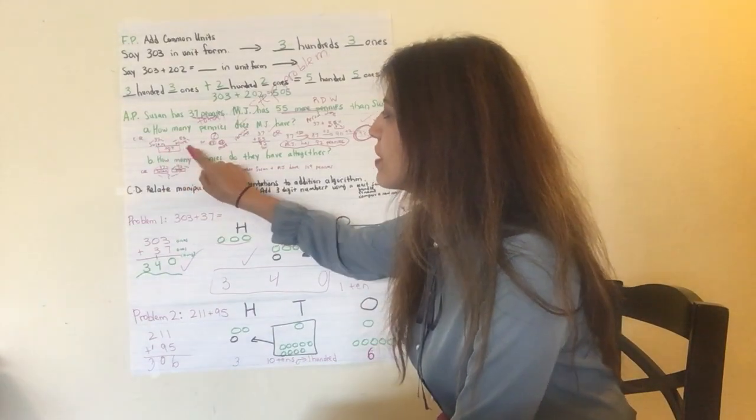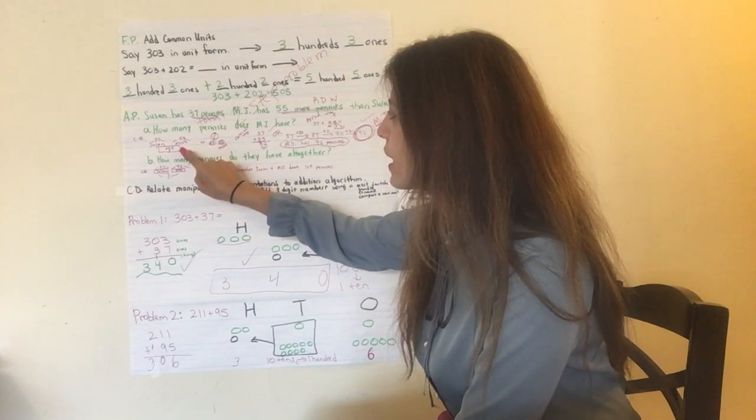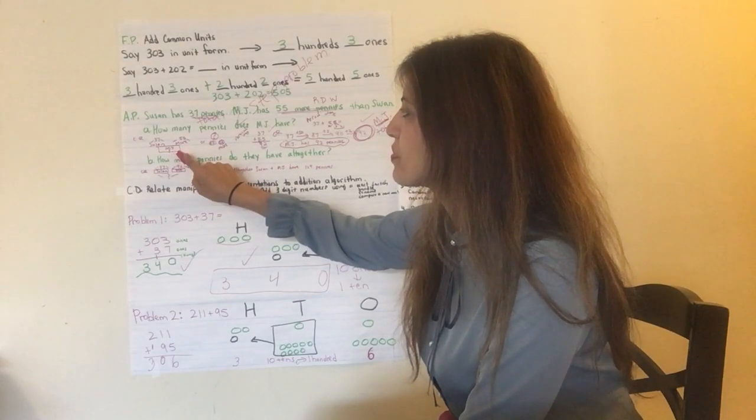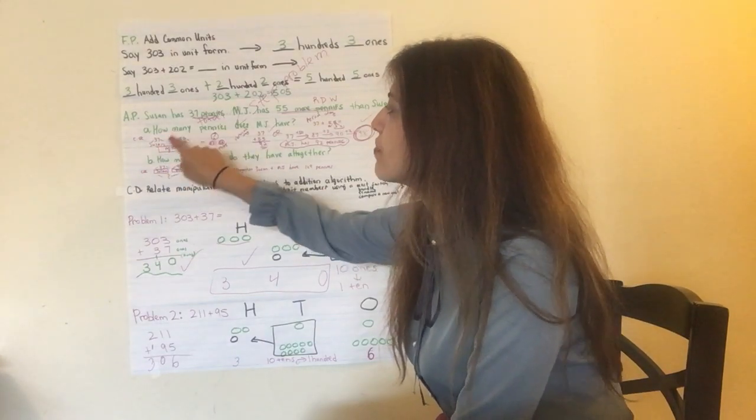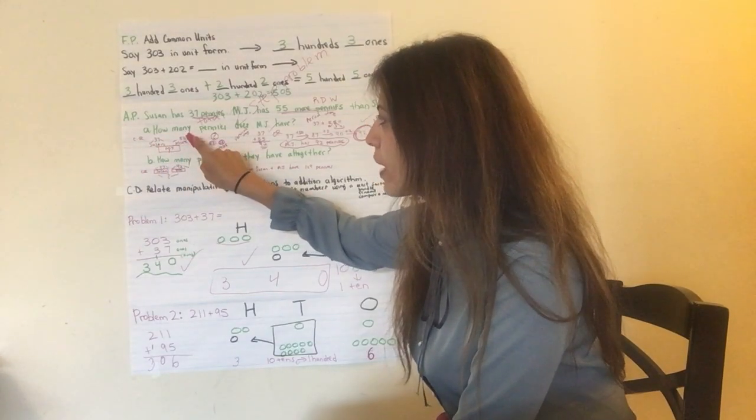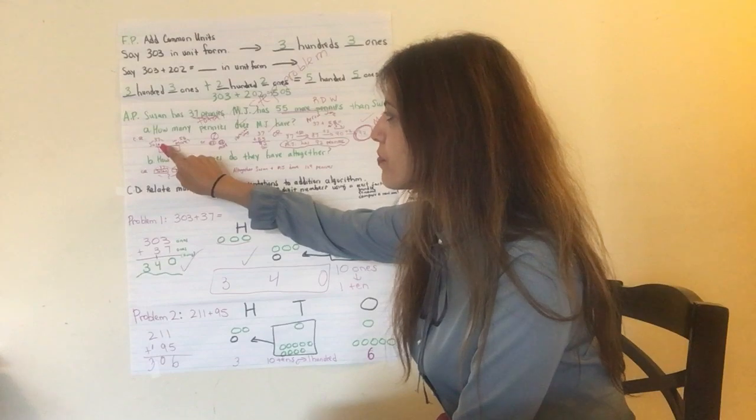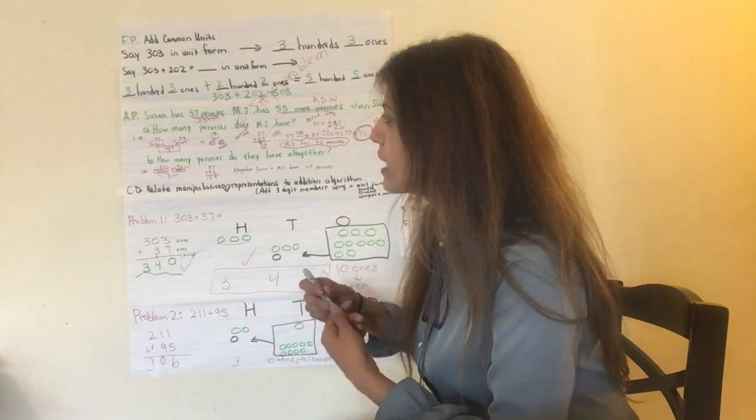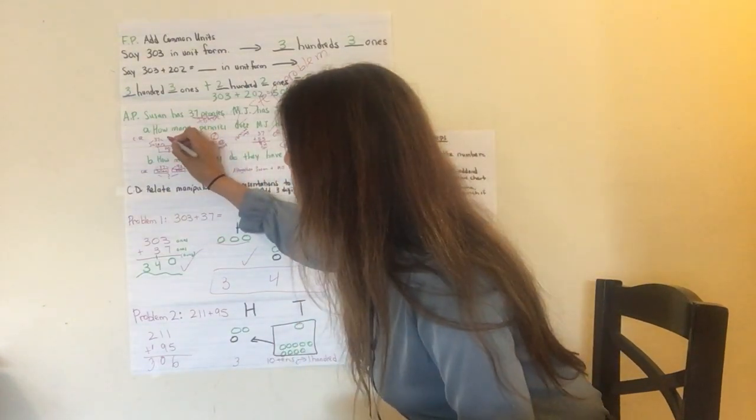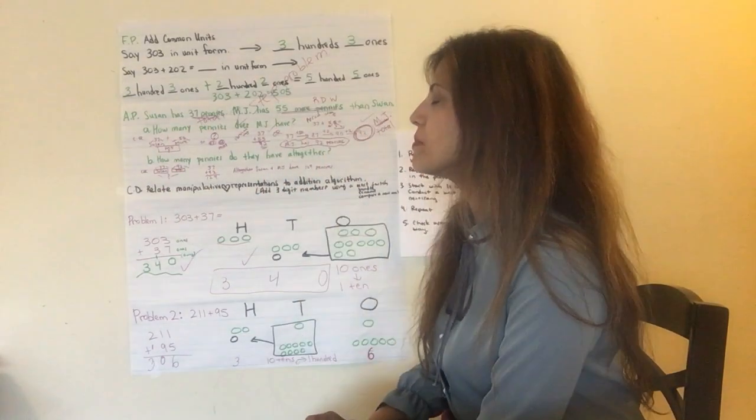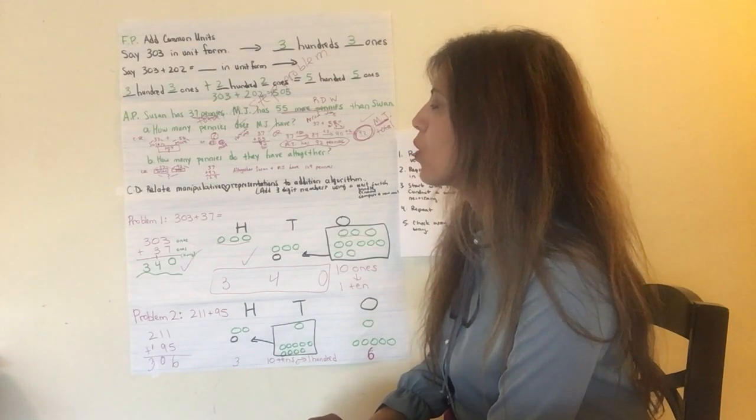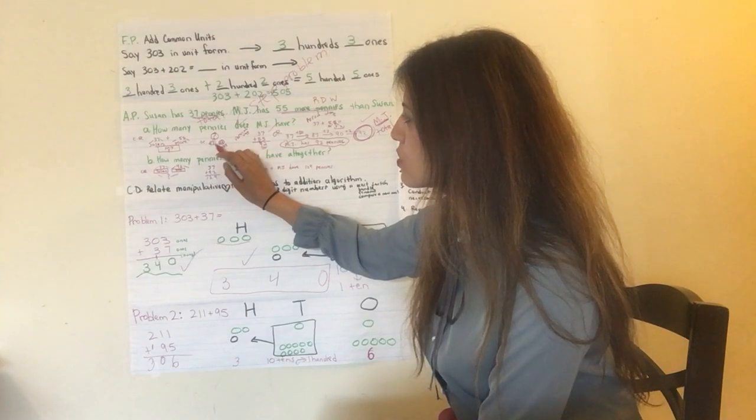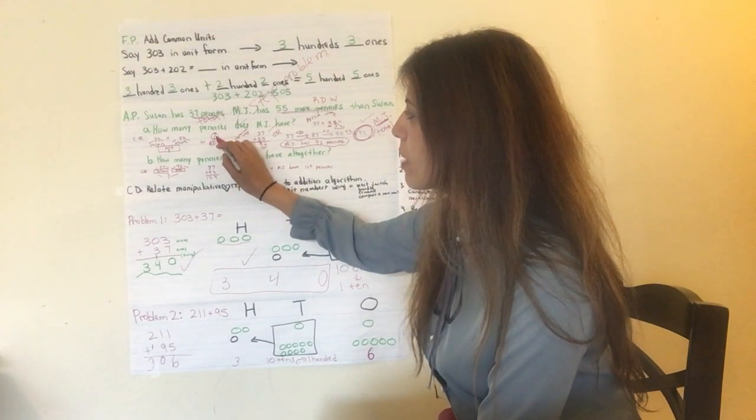There's Susan with 37. We have 55 more, right? And we need to figure out how many pennies MJ has. Again, 37 for Susan. MJ has 55 more, right, than Susan. So 37 and 55. And we need to figure out how many pennies she has. So 37 more. It seems like it's going to be plus. It seems like we're going to have to add those two numbers. Or, again, you can do it conceptually represented using 37 for Susan here, 55 more, and then here for MJ.